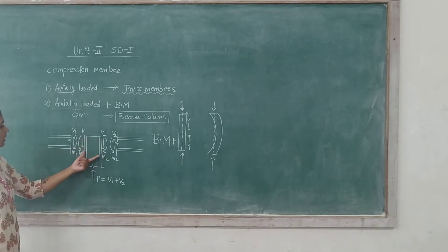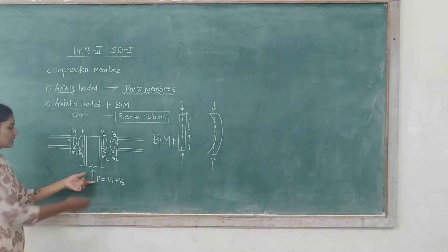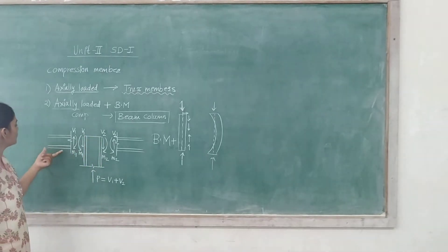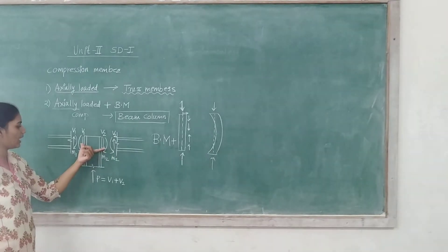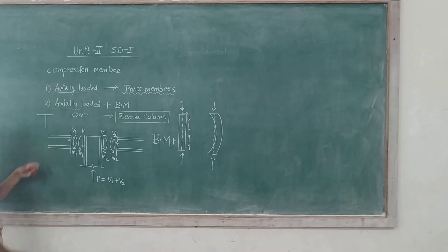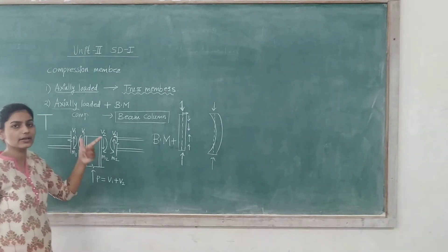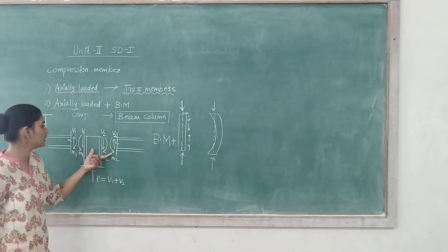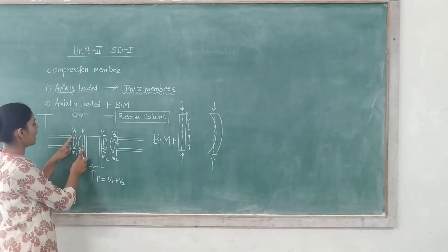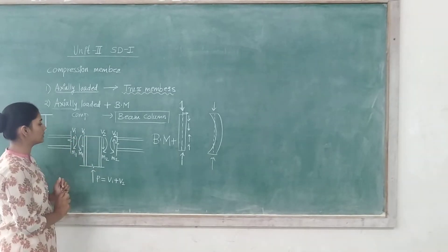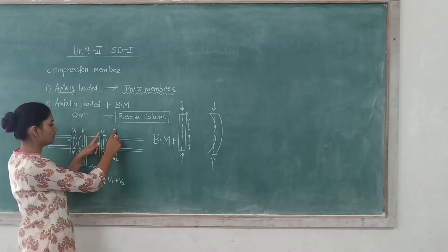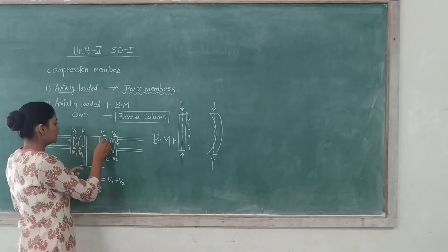To understand how you know it is axially loaded with no bending moment, let's look at this column-beam arrangement. Here we have a column, and beams are framing into it at a joint. The beams are applying shear forces to the column at that point. The resultant of forces acting across the section is called shear force. So these two shear forces coming from the beams on either side result in a moment at that joint.